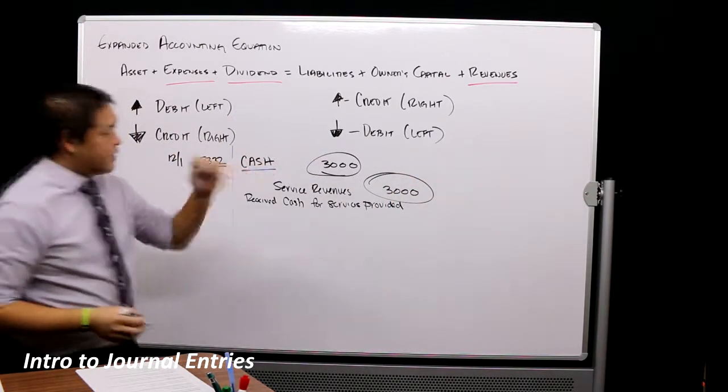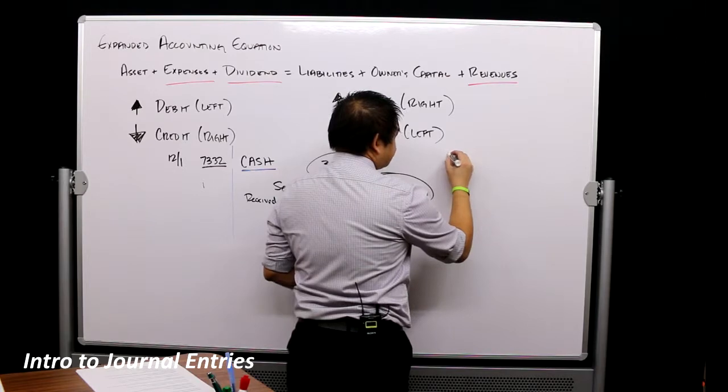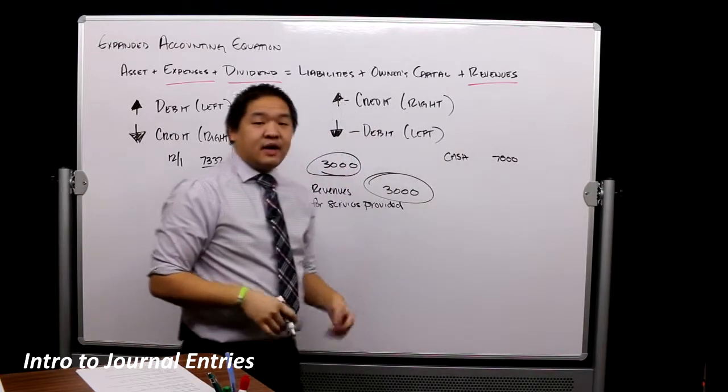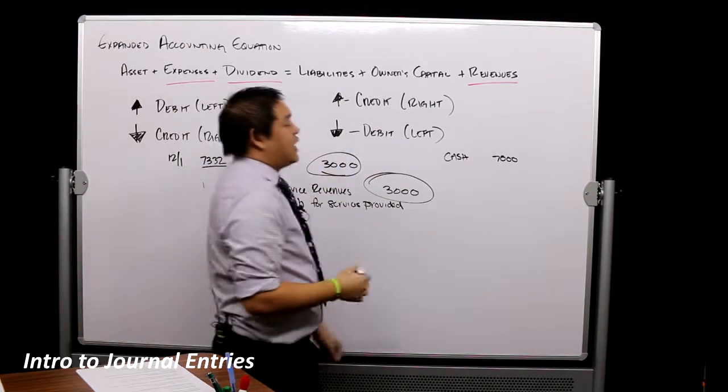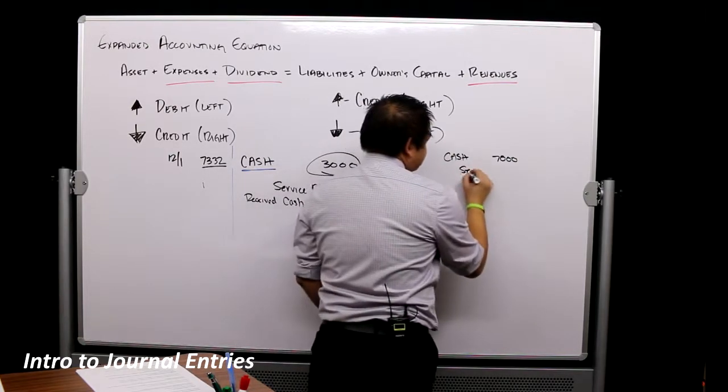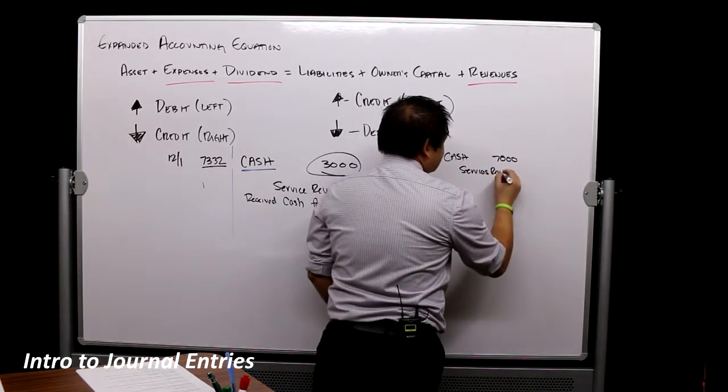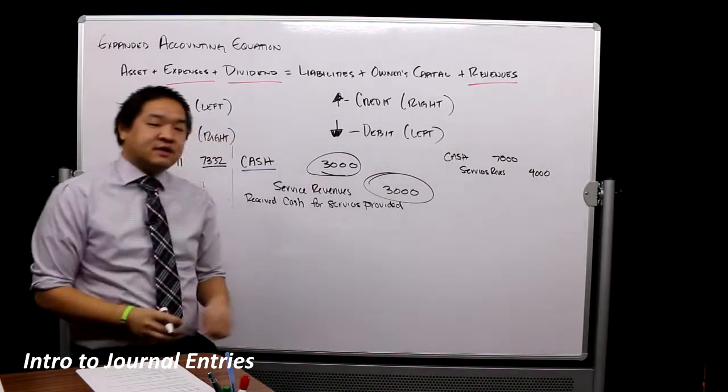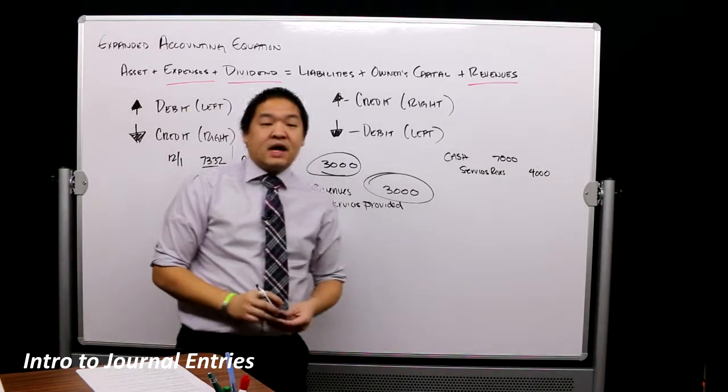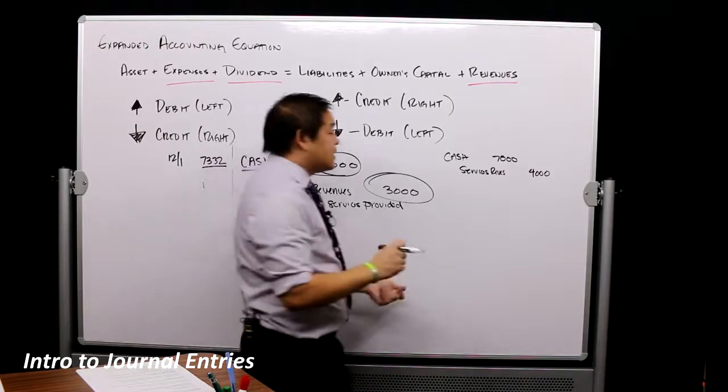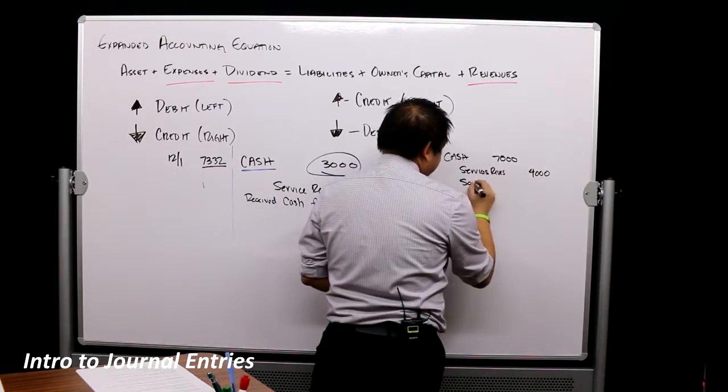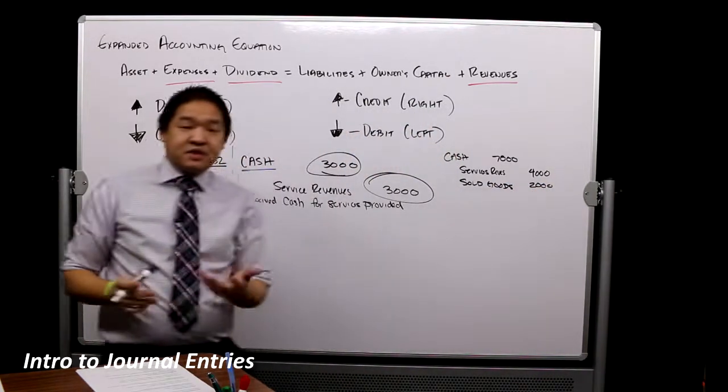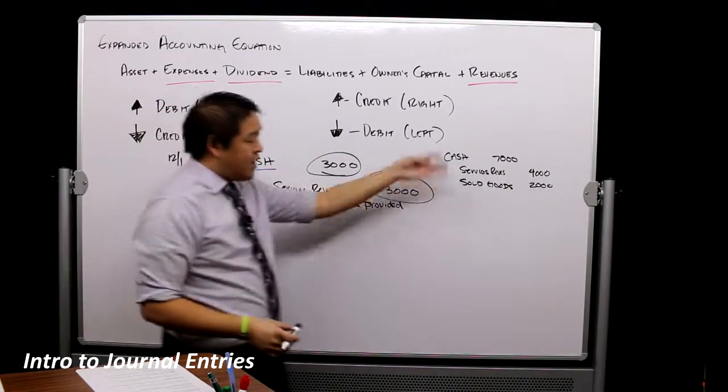So I'm going to put it over here on this board. Let's assume that I'm going to receive cash for $7,000. I'm going to put $7,000 in my bank. Increases, debit the account. Credit. Now, how did I receive that $7,000? Well, let's say I did some services of $4,000. So I provided some service. I received $4,000, but I received $7,000 in cash, so we're missing $3,000.